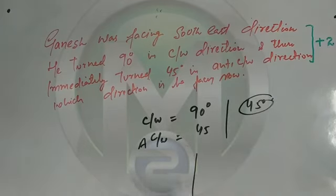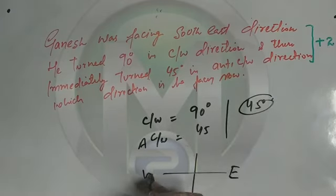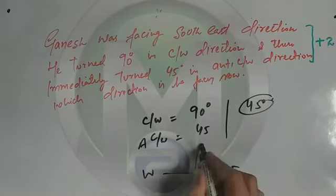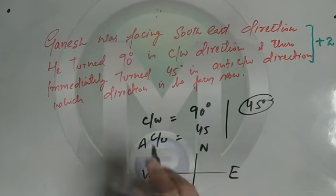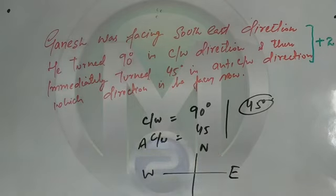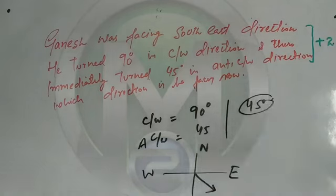Clockwise 90 degrees, then anti-clockwise 45 degrees — net rotation is 45 degrees. Now we figure out in which direction to move. The first direction is South-East, and then we apply the 90-degree clockwise rotation.